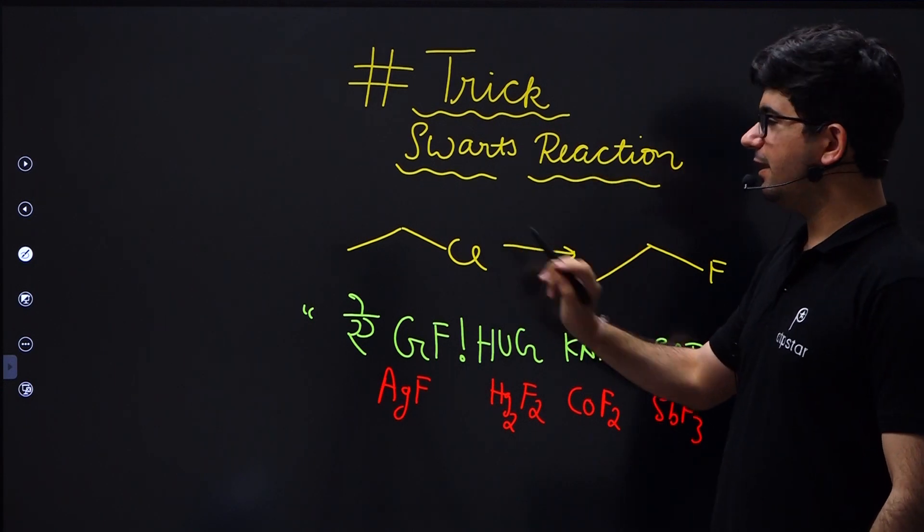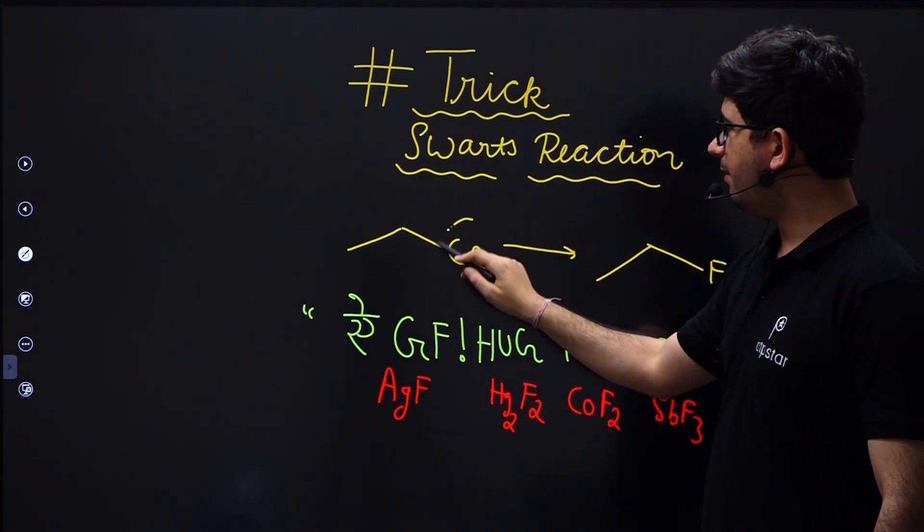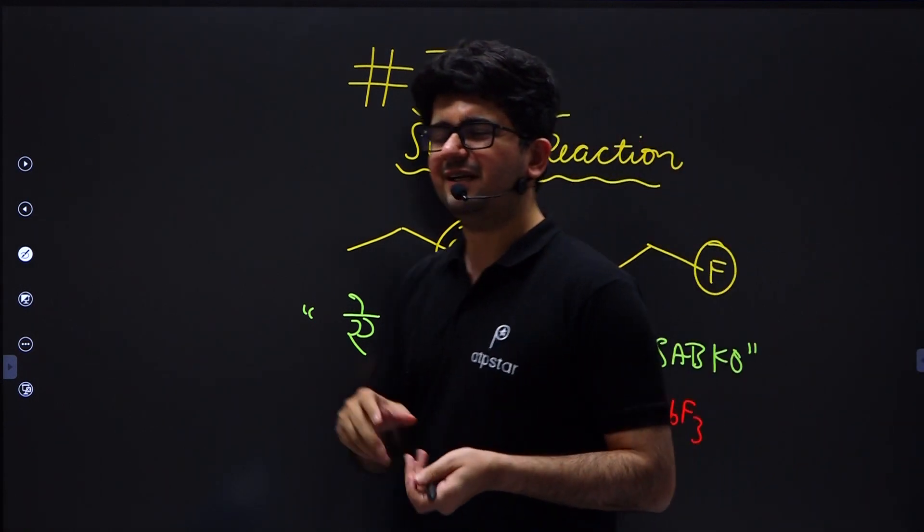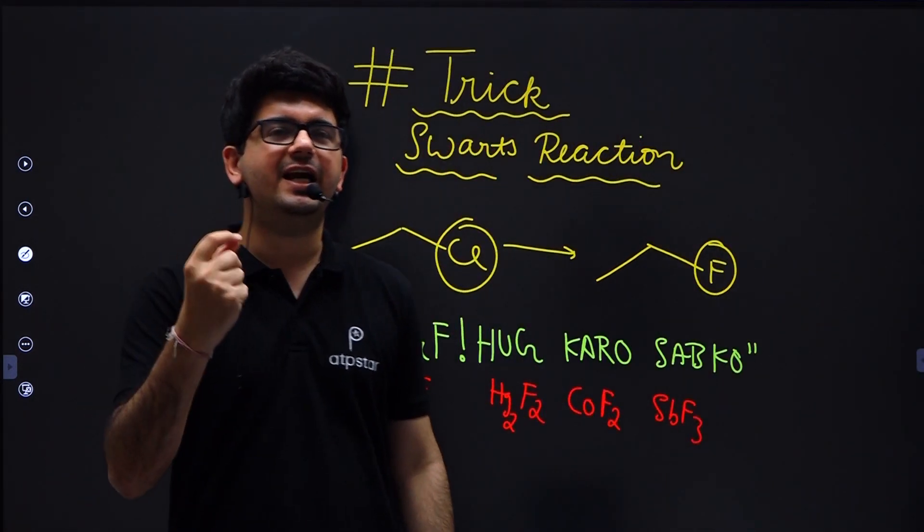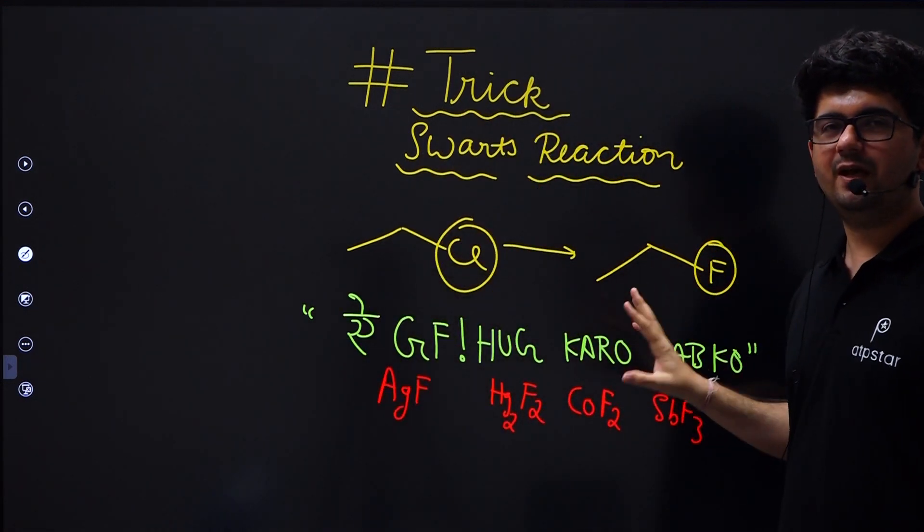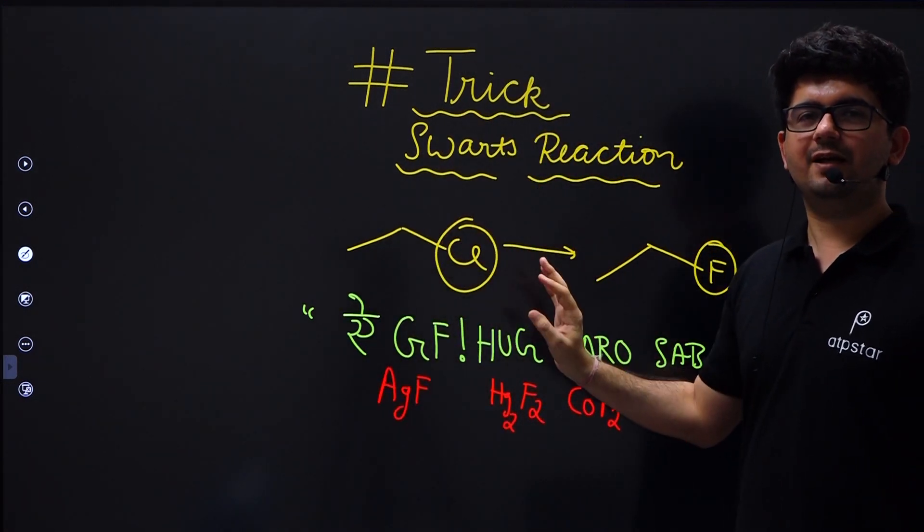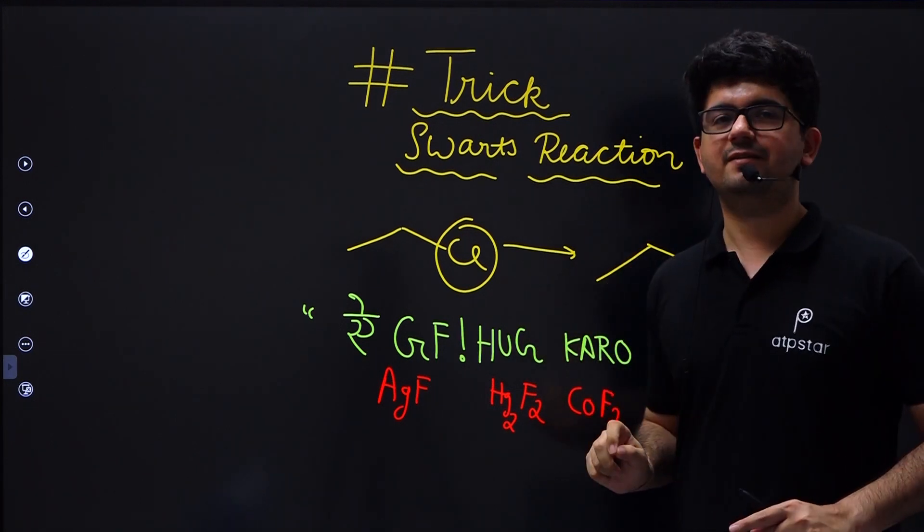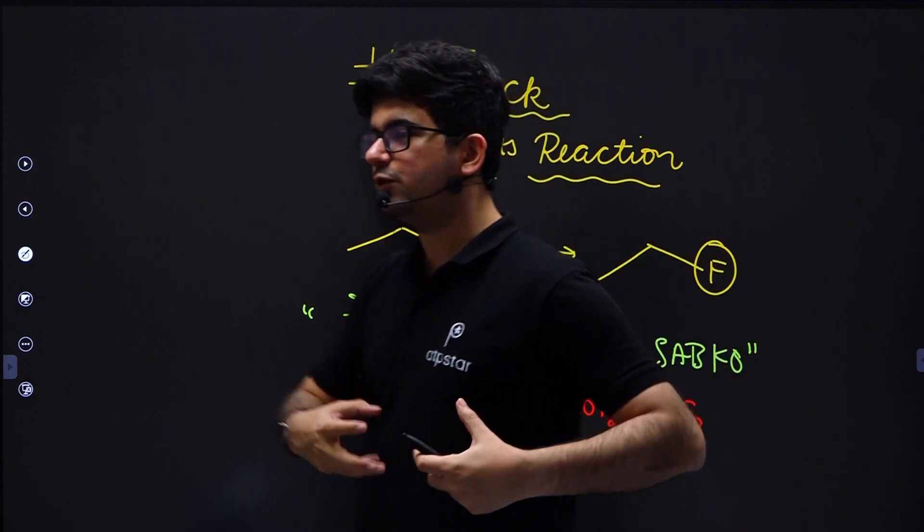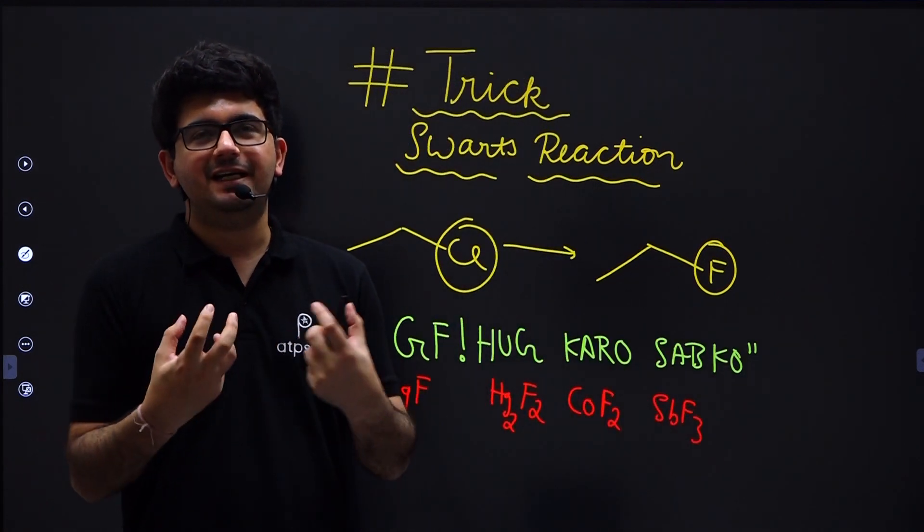So look, what's clearly happening here - this halogen Cl is being removed and fluorine is coming, meaning it is a halide exchange reaction in which one of the halogen is replaced by fluorine. Adding fluorine is not that easy, for this there's a special reaction called Swarts reaction. In Swarts reaction, we use some fluorides of transition metals.